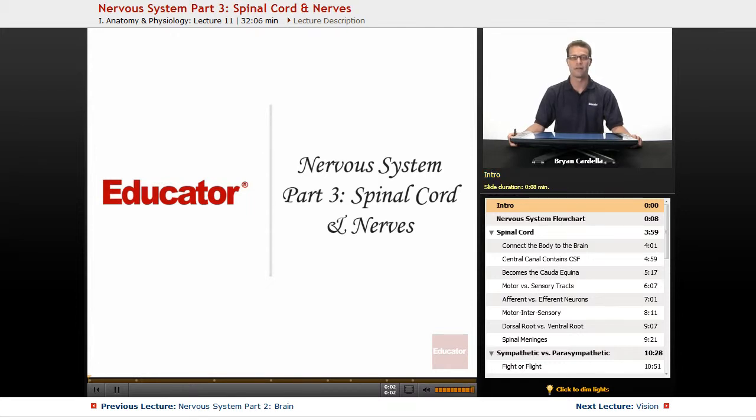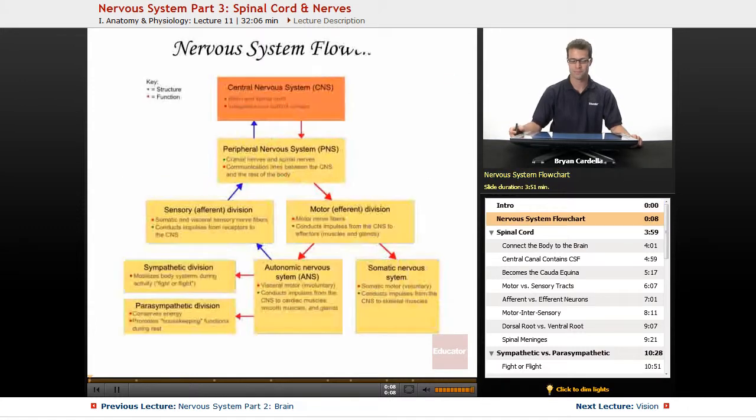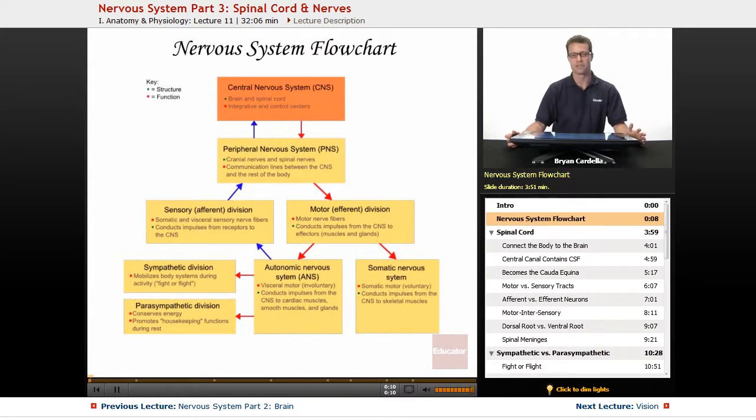Hi, welcome back to Educator.com. This is the next nervous system lesson, specifically on the spinal cord and nerves. If we were to look at the nervous system as a giant flow chart that had to do with the brain, the spinal cord, and all the nerves, this is a very good representation.